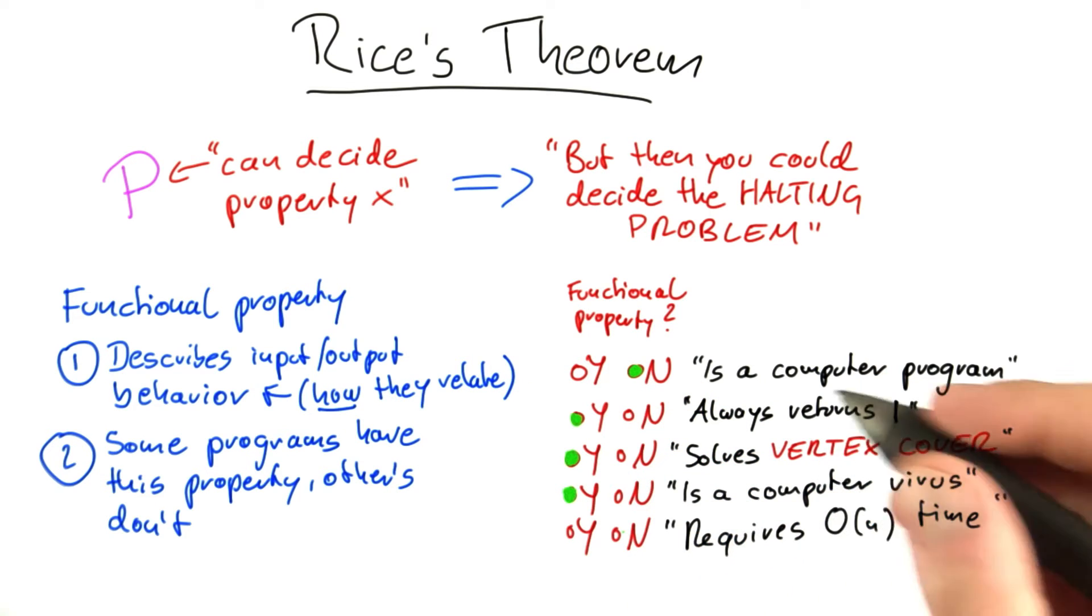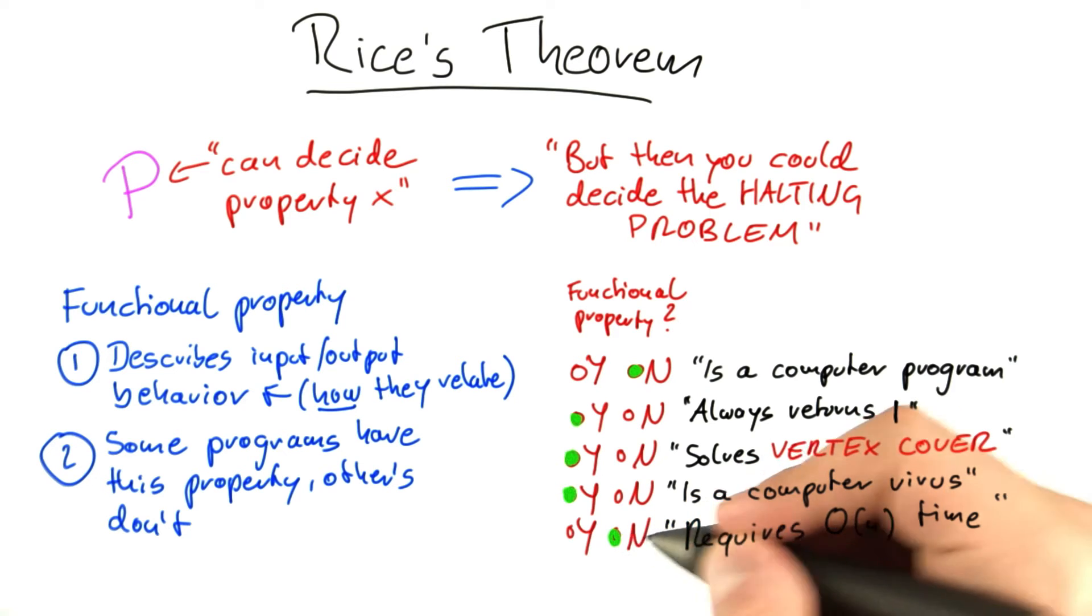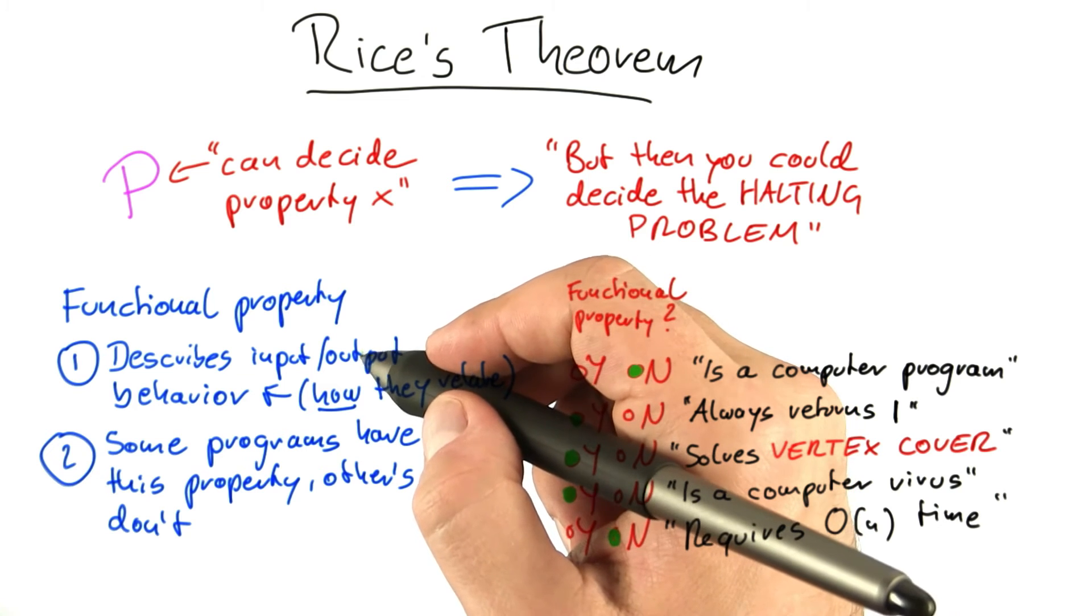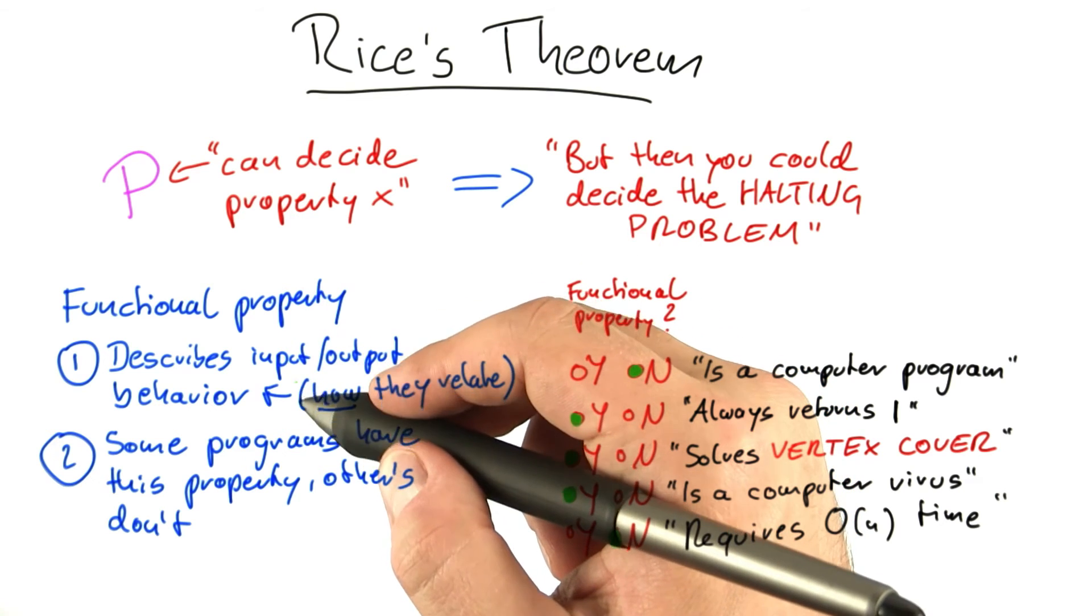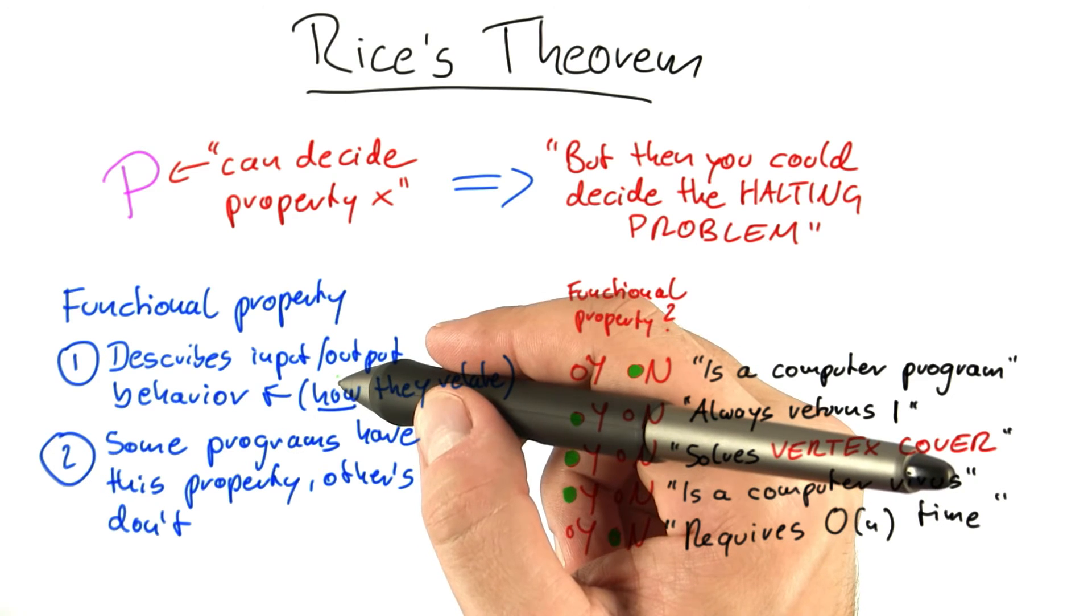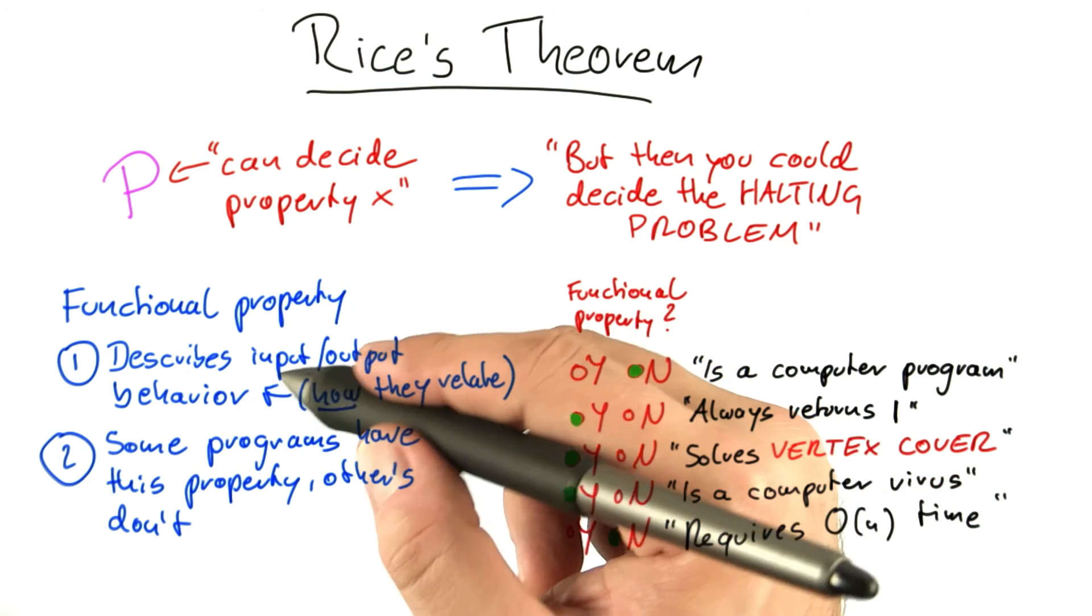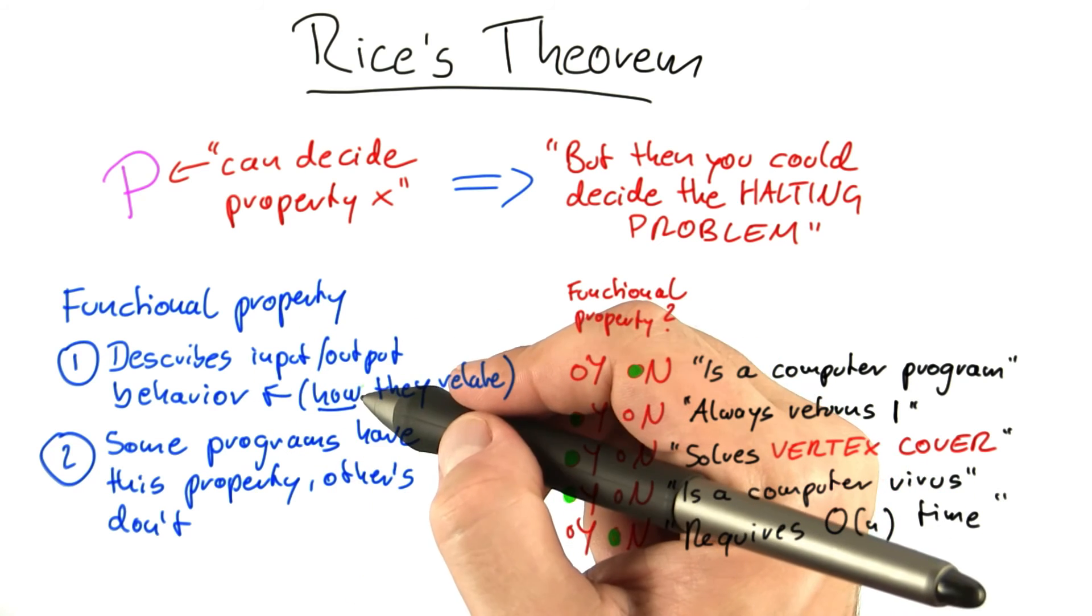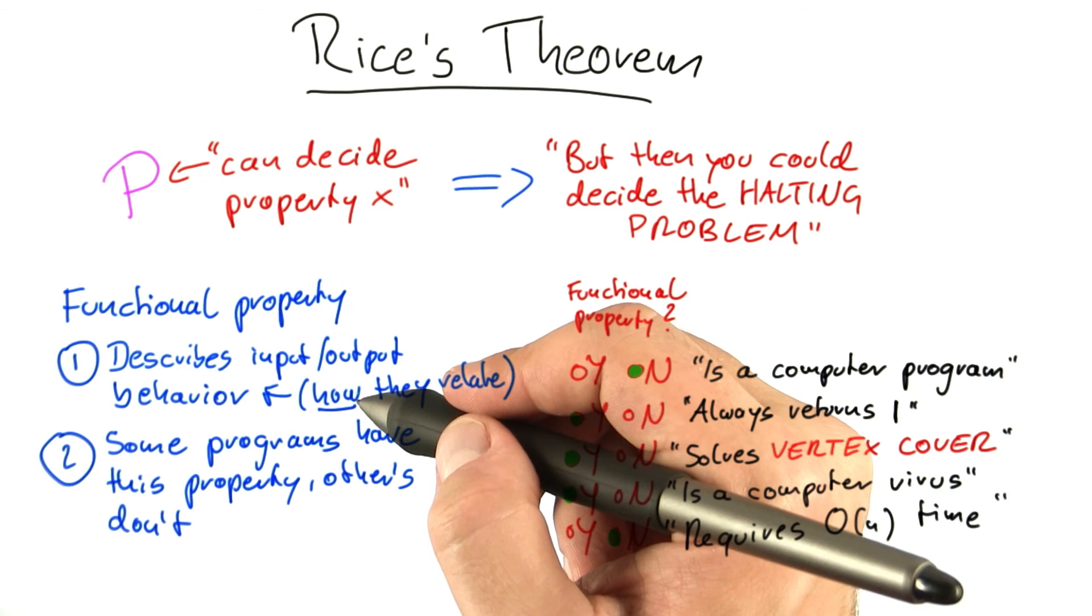The final one is a bit tricky. Saying that a program only requires linear time is not a functional property because that does not describe how the output relates to the input. It is a property of the program, but it is not a functional property because it doesn't ask what does the program do. It only asks how fast is the program at doing that.